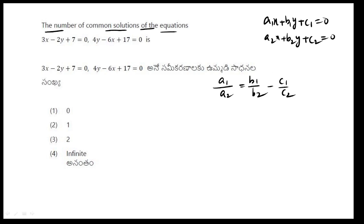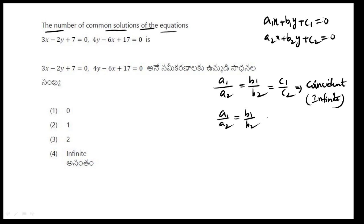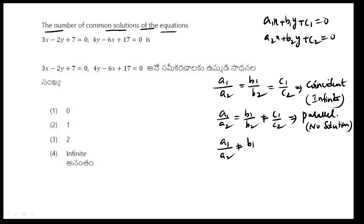Check the values of A1 by A2, B1 by B2, and C1 by C2. If all three ratios are equal, the lines are coincident and there are an infinite number of solutions. If A1 by A2 equals B1 by B2 but not C1 by C2, the lines are parallel. For intersecting lines, the solution is unique — exactly one solution.